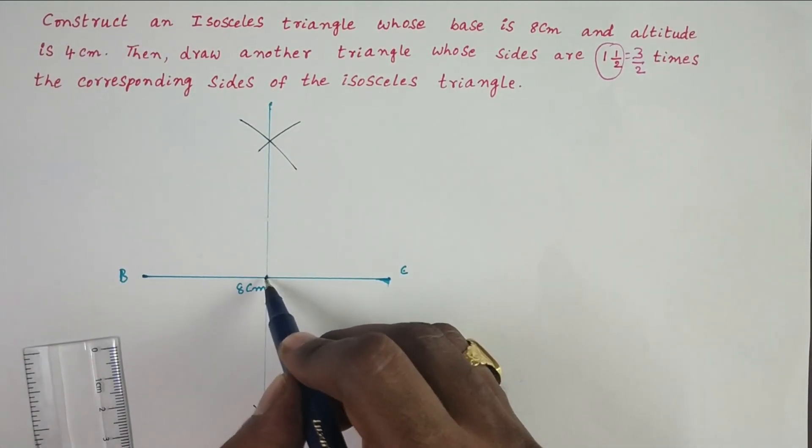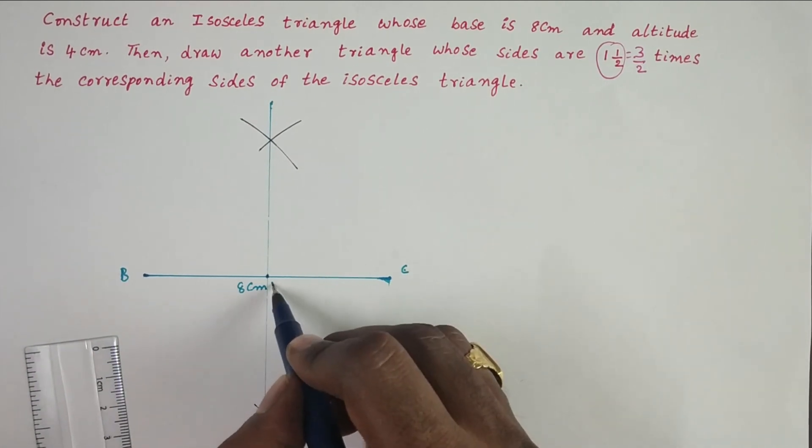Take the intersecting point of the perpendicular bisector and BC as M.